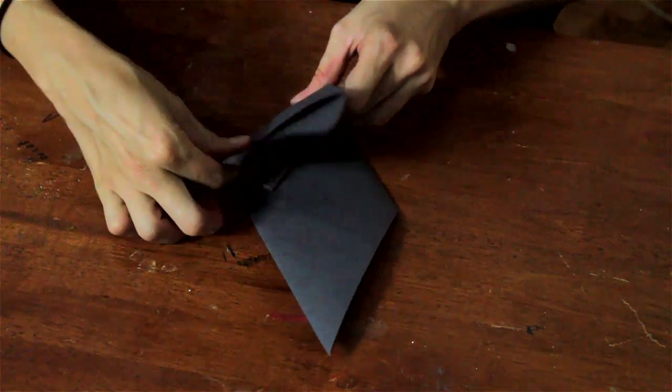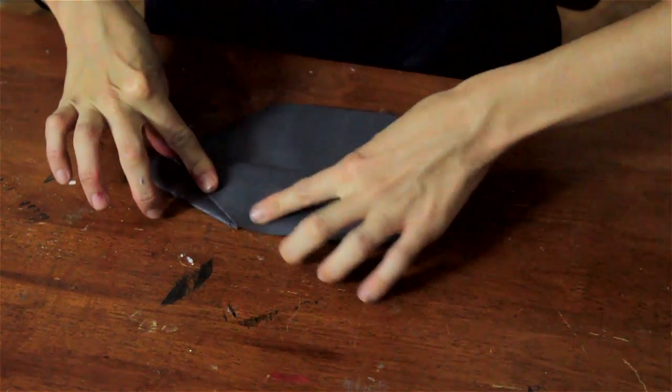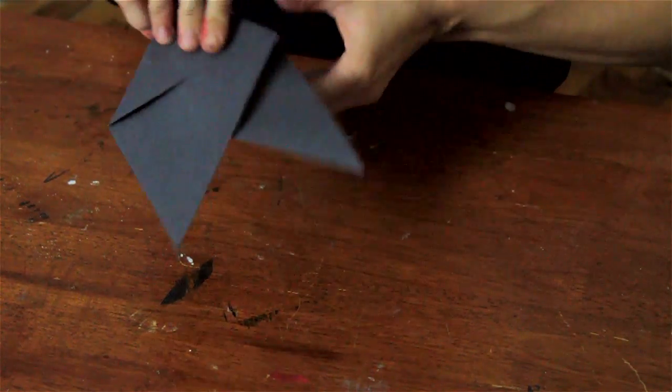We're going to do it on the other side. So just make sure that it's nice and symmetrical. And this part you're going to want to fold this edge to meet that edge. So again, keeping it nice and neat.